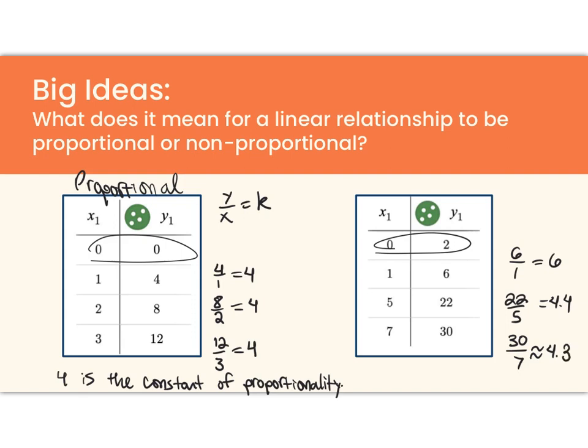And these are not equal. These are all different. So I don't have a constant of proportionality. The ratio of y over x is not constant. And so that means this is a non-proportional relationship.